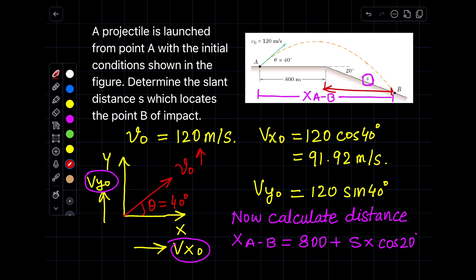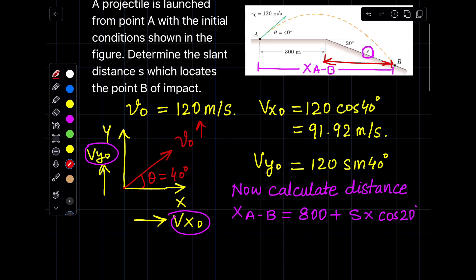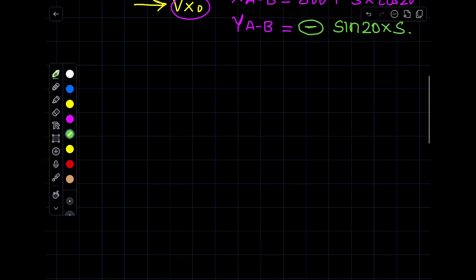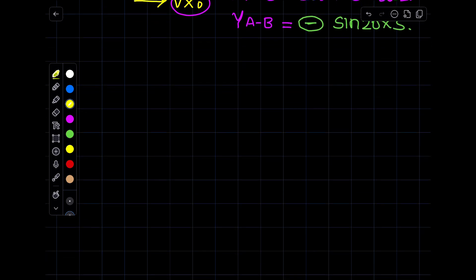In horizontal or in X direction, it is easy to calculate. I will write 800 plus the component of S, that is S multiplied by cos 20°. This will be the distance XA-B in X direction. Similarly, what will be the Y direction distance? We can also calculate YA-B by using the component of S. I will say it is S sine 20°, and this is minus, negative Y, because it is going in downward direction from our datum or reference point.